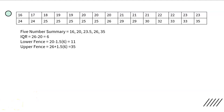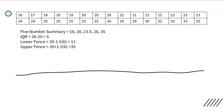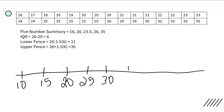So we have the IQR which is 26 minus 20, equal to 6. Our lower fence is 11 and our upper fence is 35. Now we have everything we need — our five-number summary and our lower and upper fences — so we can draw our box plot. I'm going to draw a number line. My lower fence is 11 and my maximum and upper fence is 35, so I need to go at least from 10 to 35. I'll start with 10 and go in increments of 5: 10, 15, 20, 25, 30, 35.